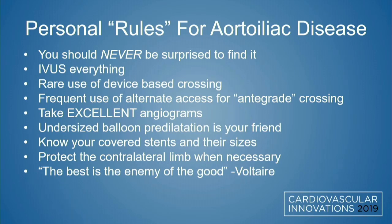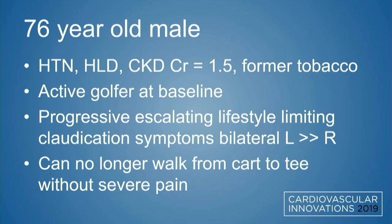Rarely do I use device-based crossing. I oftentimes will use alternate axis, including in the case we're going to discuss, for antegrade crossing. Angiography can be tough in the iliac sometimes because of how large the vessels are. Undersized balloon predilatation is your friend because it will reveal small problems before you make them big problems. Protecting the contralateral limb when necessary, and sometimes the perfect can be the enemy of the good.